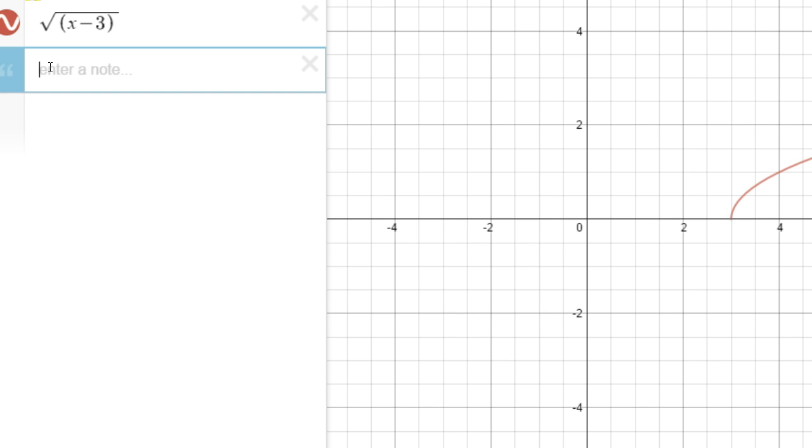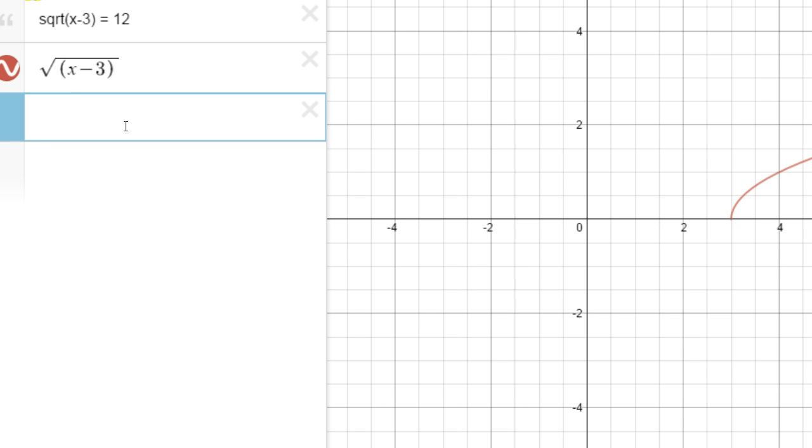Let's say we were trying to solve this equation: square root of x minus 3 equals 12. If we were trying to solve this one right here, so let's move this up here. First off, you graph the actual graph right there, and then the second part is you graph y equals 12.